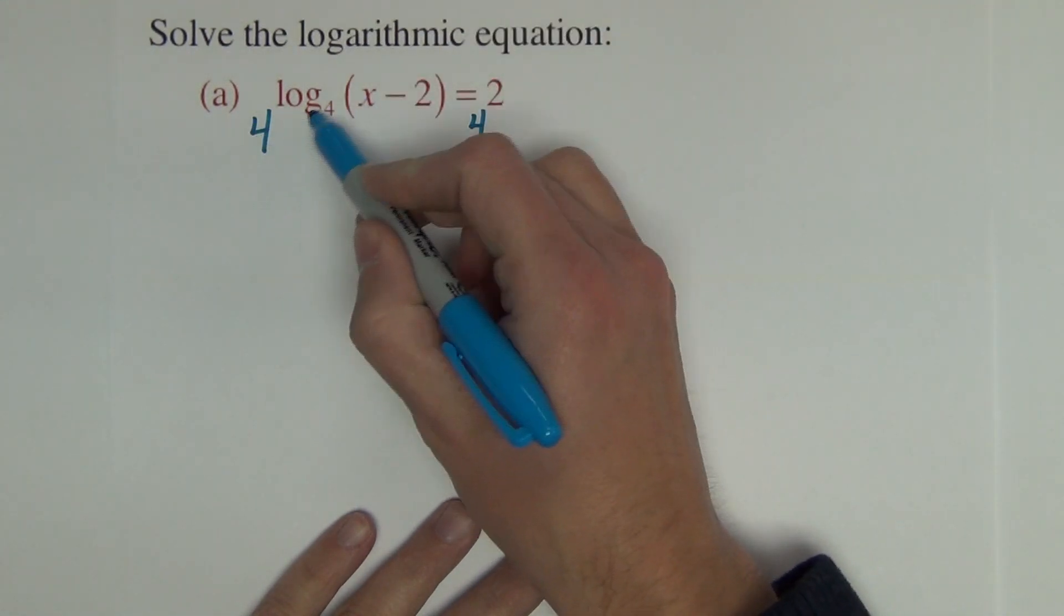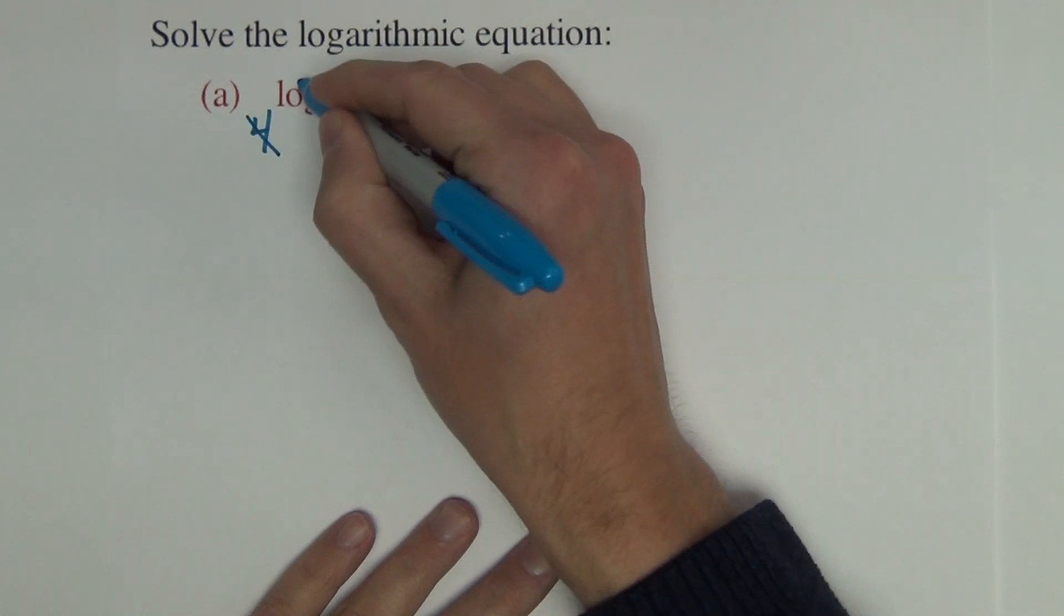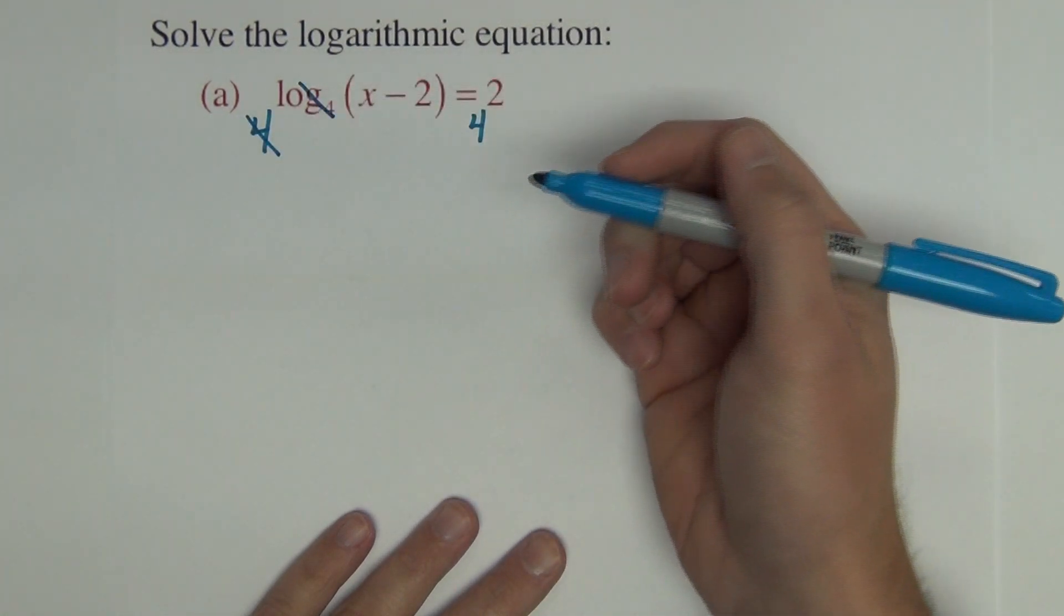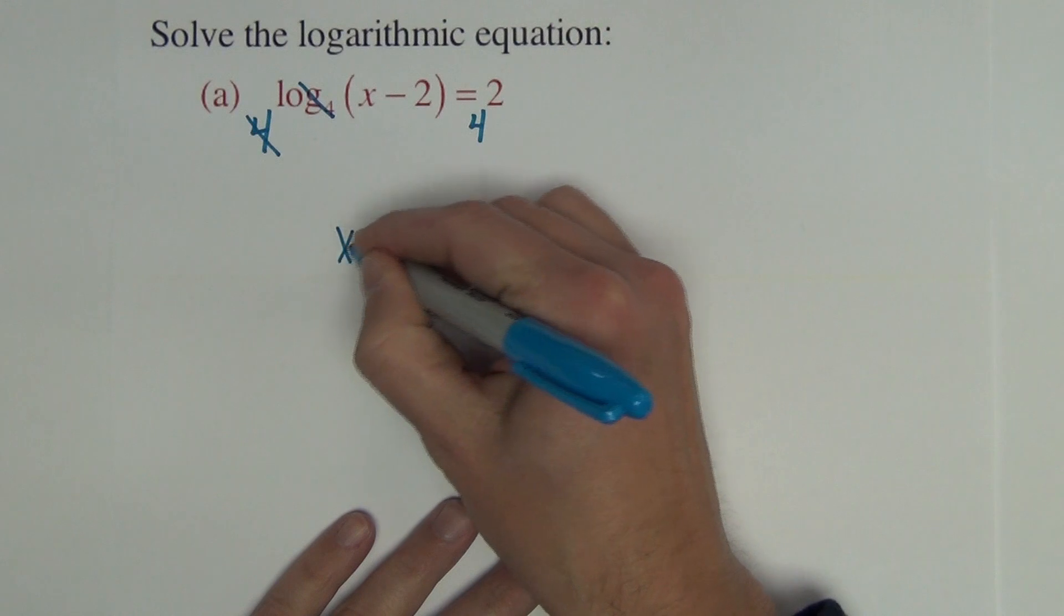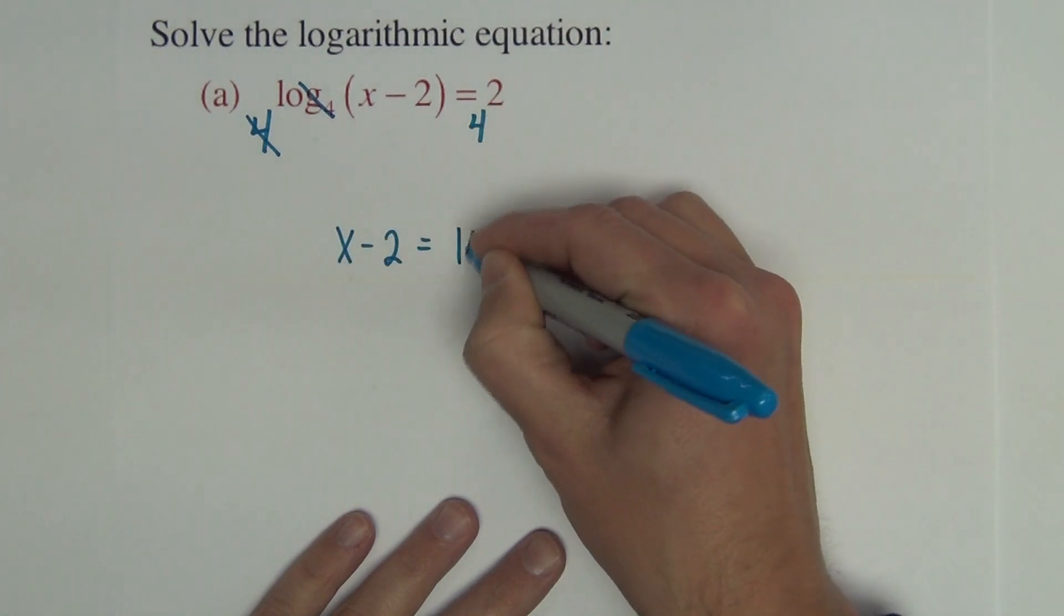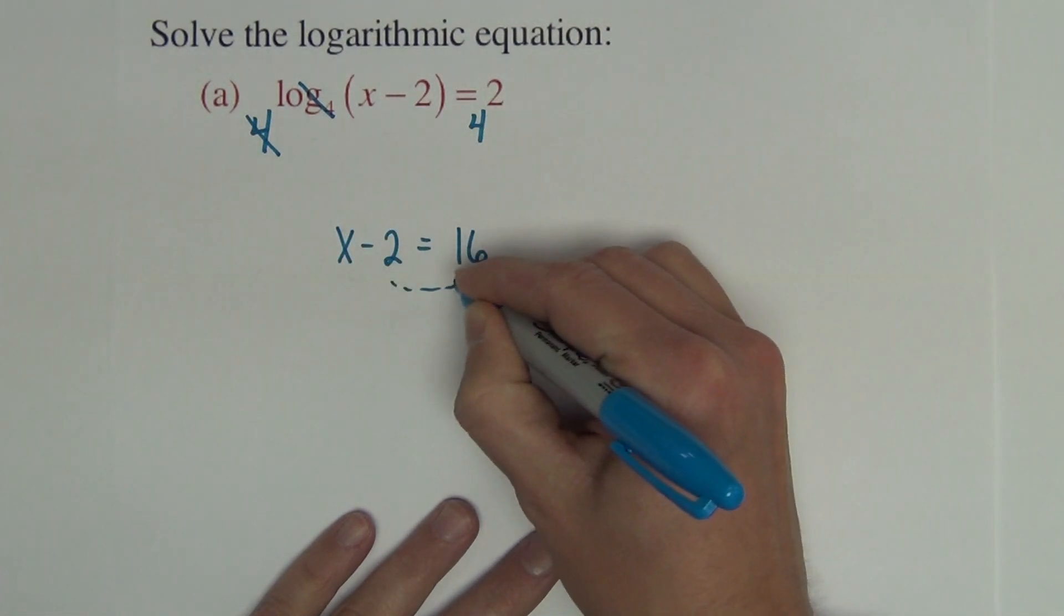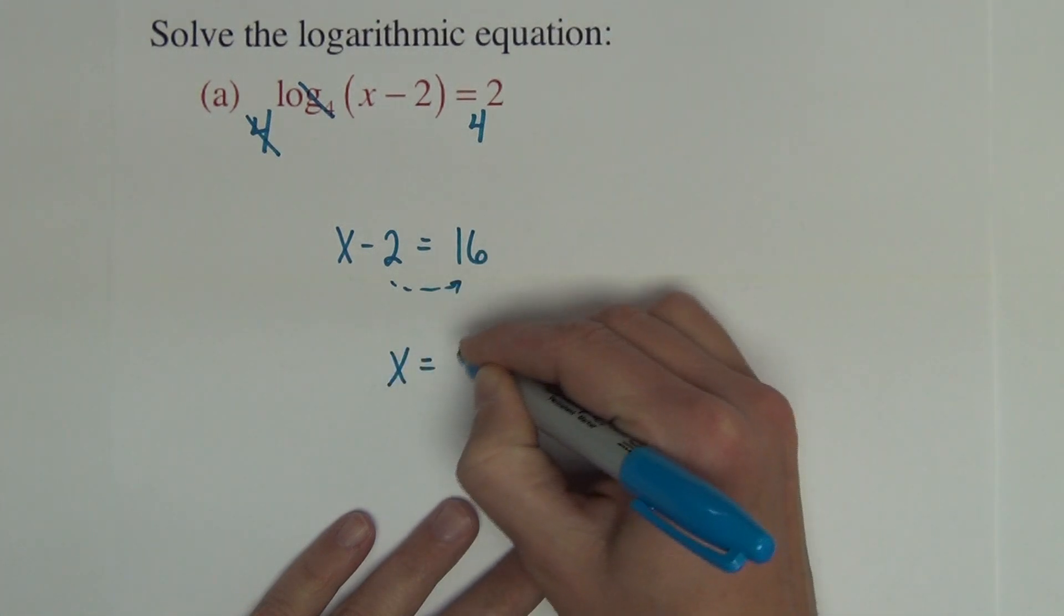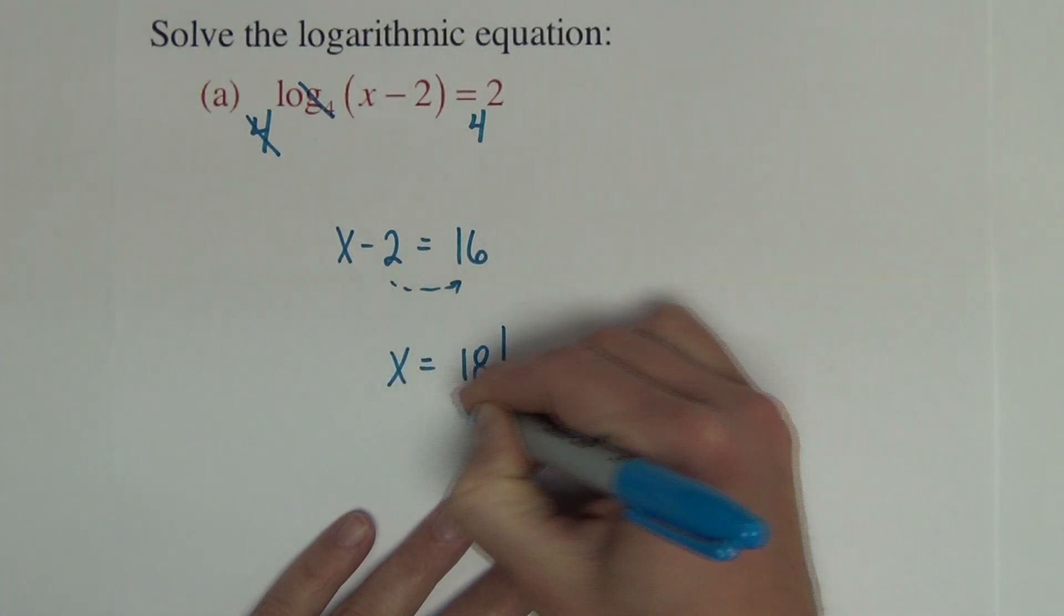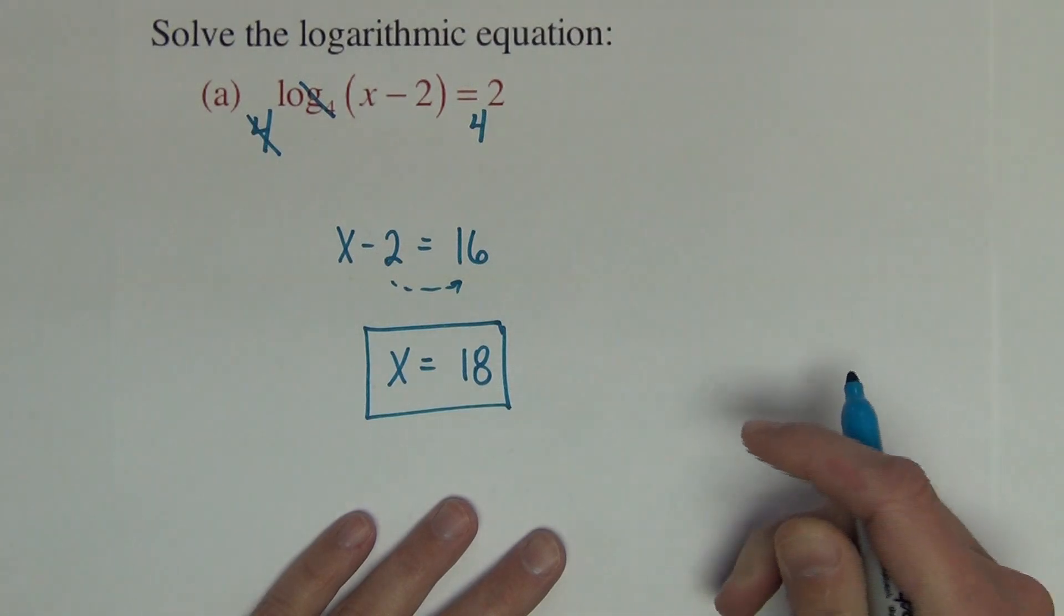What happens if these numbers match the base and the logarithm with the base 4? If they match, they cancel out. So we have x minus 2 equals 4 squared which is 16. We add the 2 across, we get x equals 18. And that's all there is to it.